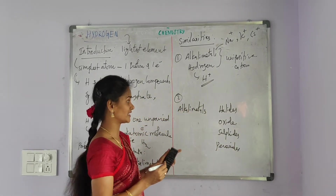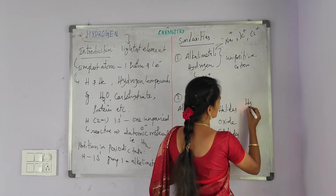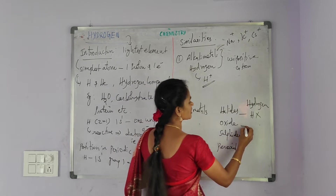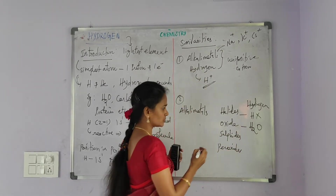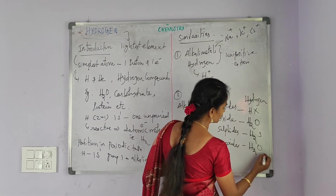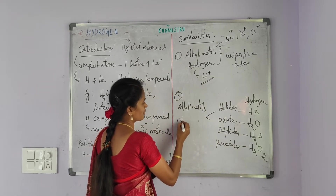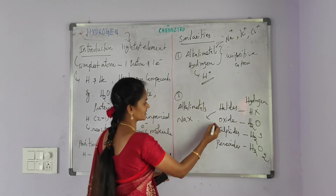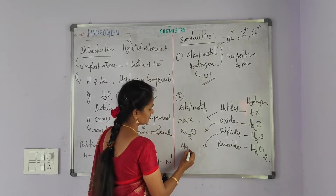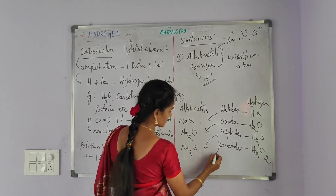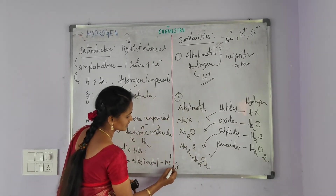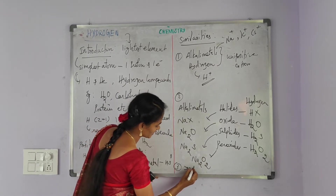Like alkali metals, hydrogen also forms halides (HX), oxides (H2O), and sulfides (H2S). Similarly, alkali metals form halides (NaX), oxides (Na2O), sulfides (Na2S), and peroxides (Na2O2). Both can also act as reducing agents.